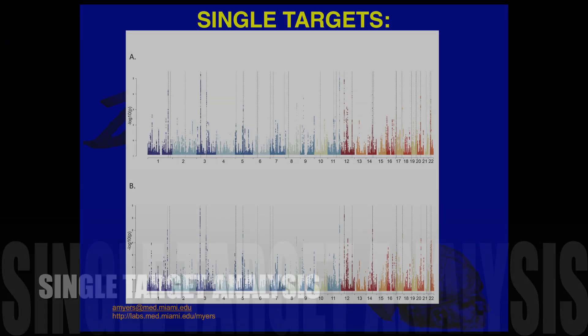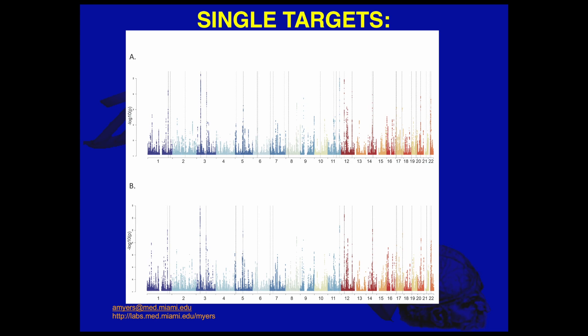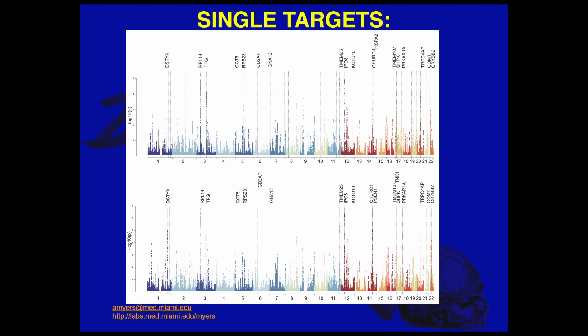Our first analysis looked at single targets, examining the relationship between individual DNA alleles and downstream expression. Shown here are our cis-hits, which are alleles correlated with downstream expression that are located very close to the affected target. The top graph shows results from Cronus and the bottom from Rush. Additionally, we mapped whether any of our single-target hits mapped to the list found from Genome-Wide Association Studies.